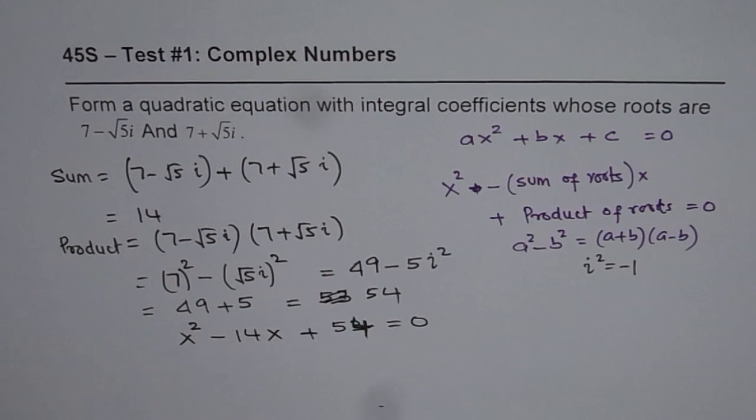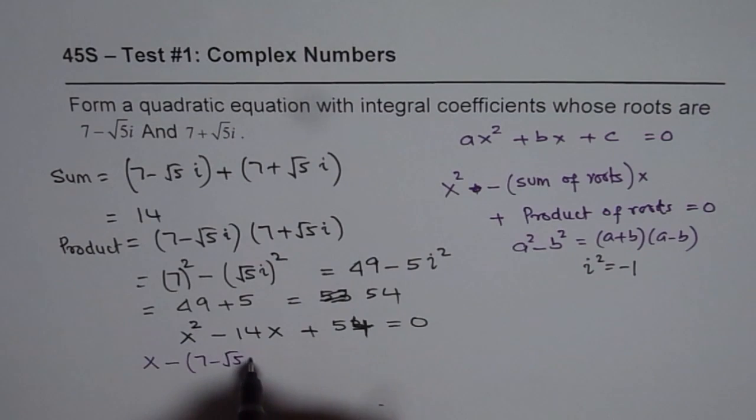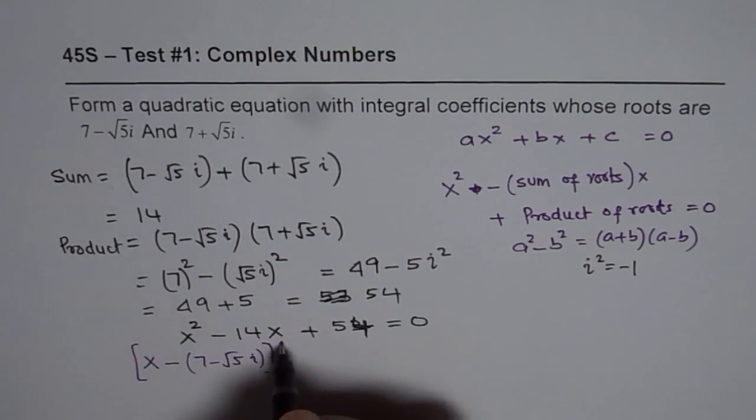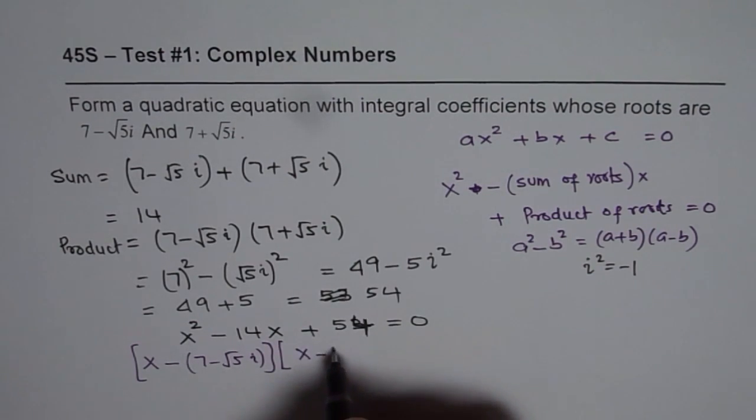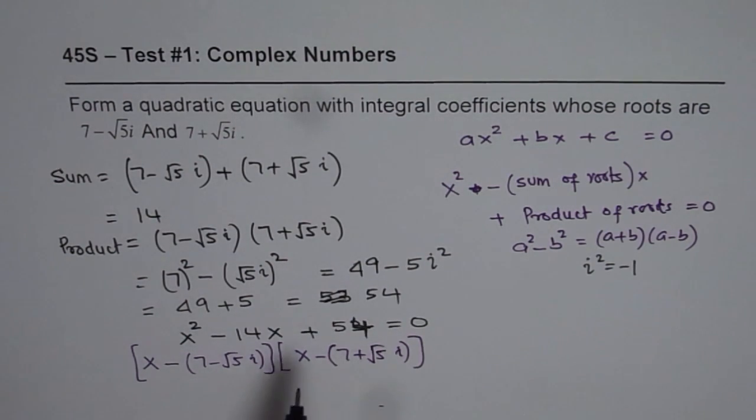The other way is kind of lengthy. You could also adopt this approach: x minus the first root, which is 7 minus square root 5i, that is the first factor, times x minus the second factor, which is 7 plus square root 5i. You can expand them, simplify, and do the needful to get the answer. But I appreciate this particular approach.